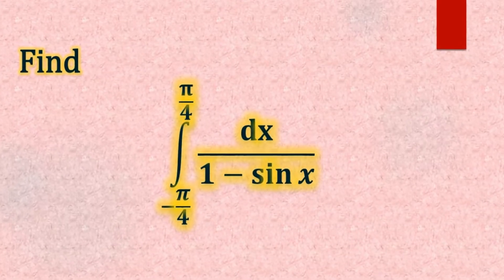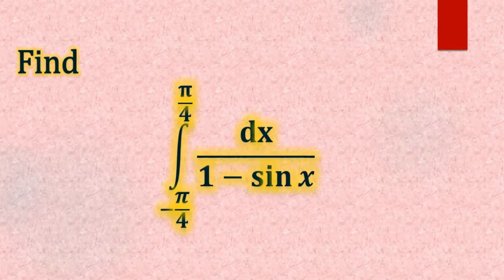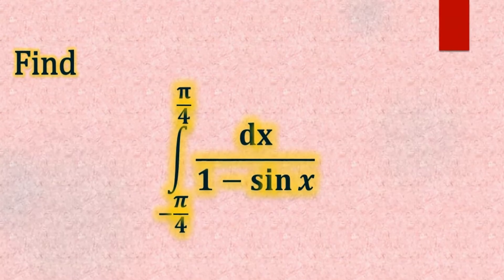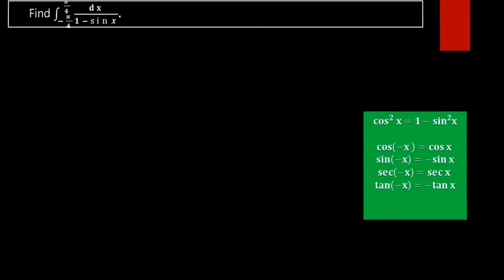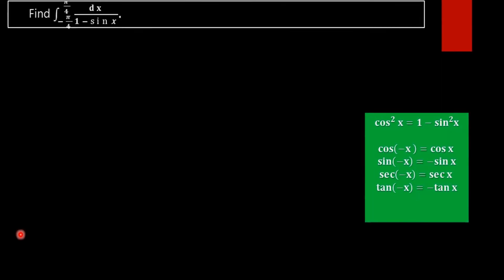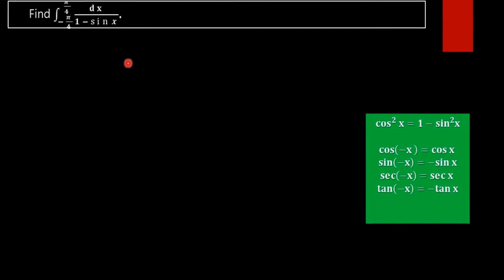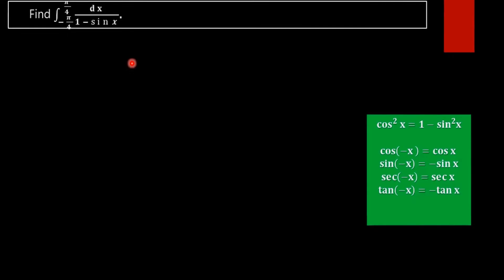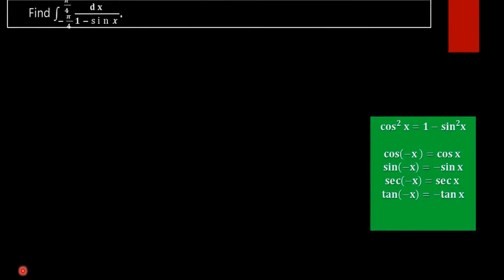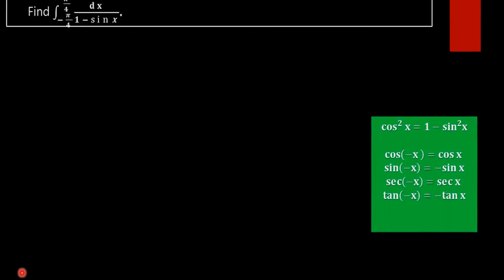Find the integral from minus pi by 4 to pi by 4 of dx divided by 1 minus sin x. Here we have to find the value of this finite definite integral.